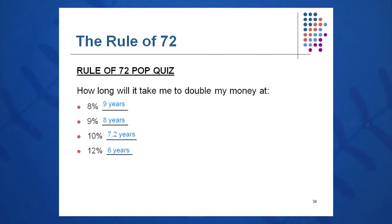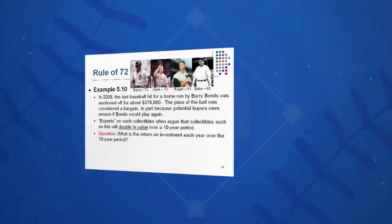So it's very very simple. 72 over R equals approximately the time it takes to double your money. Never forget this one — very very valuable.